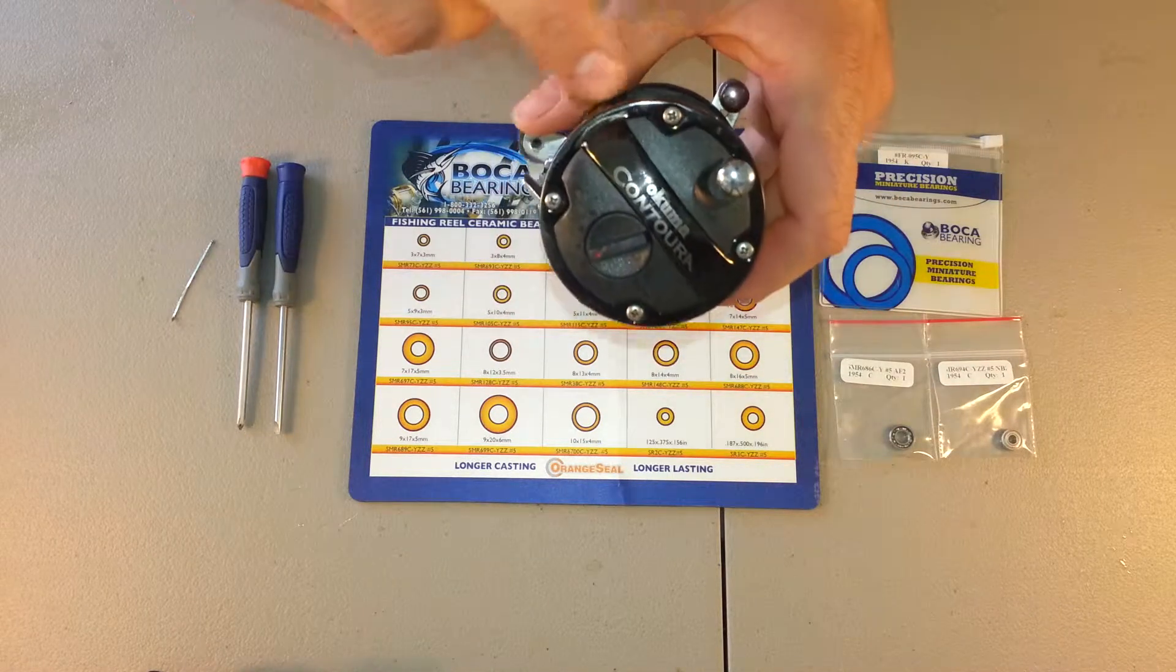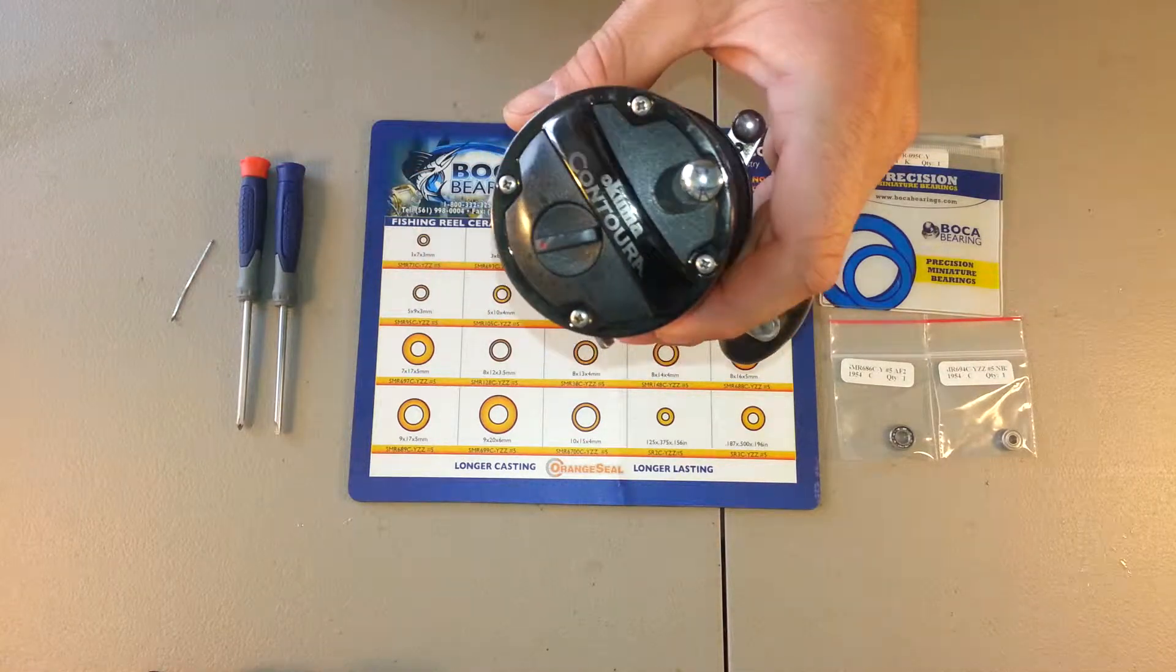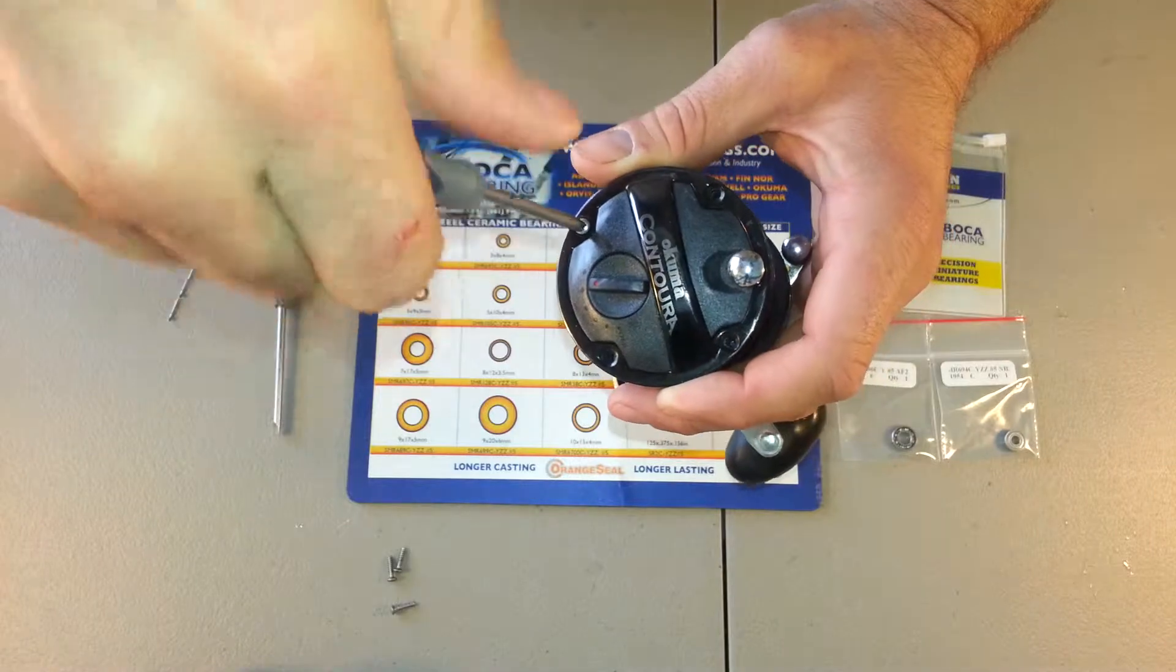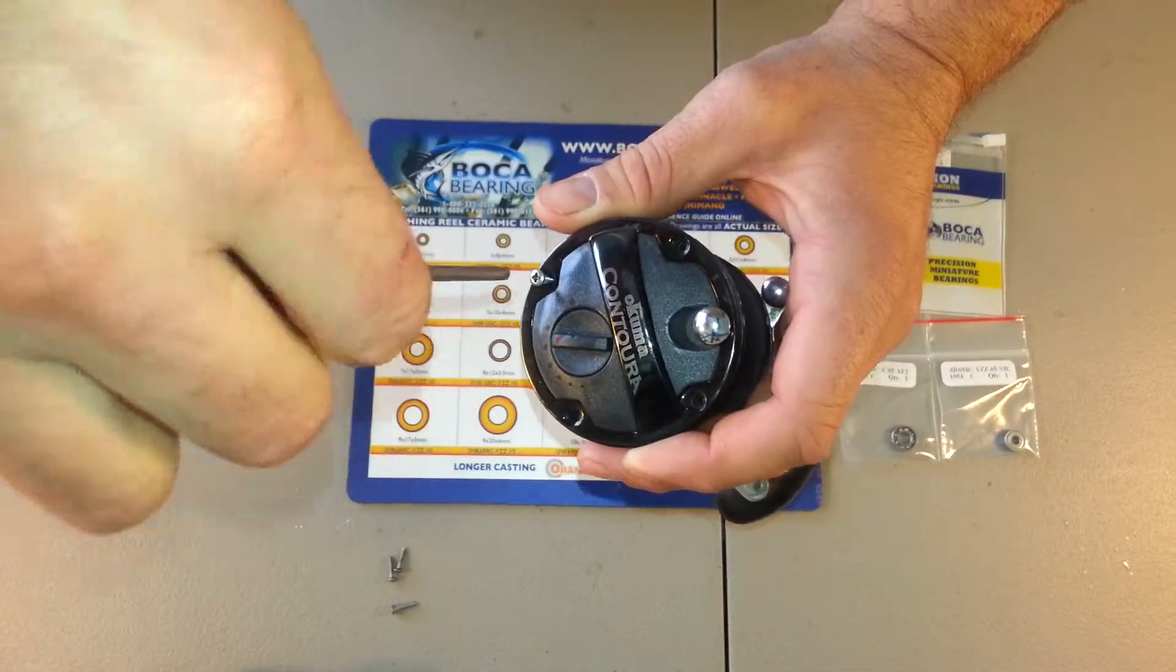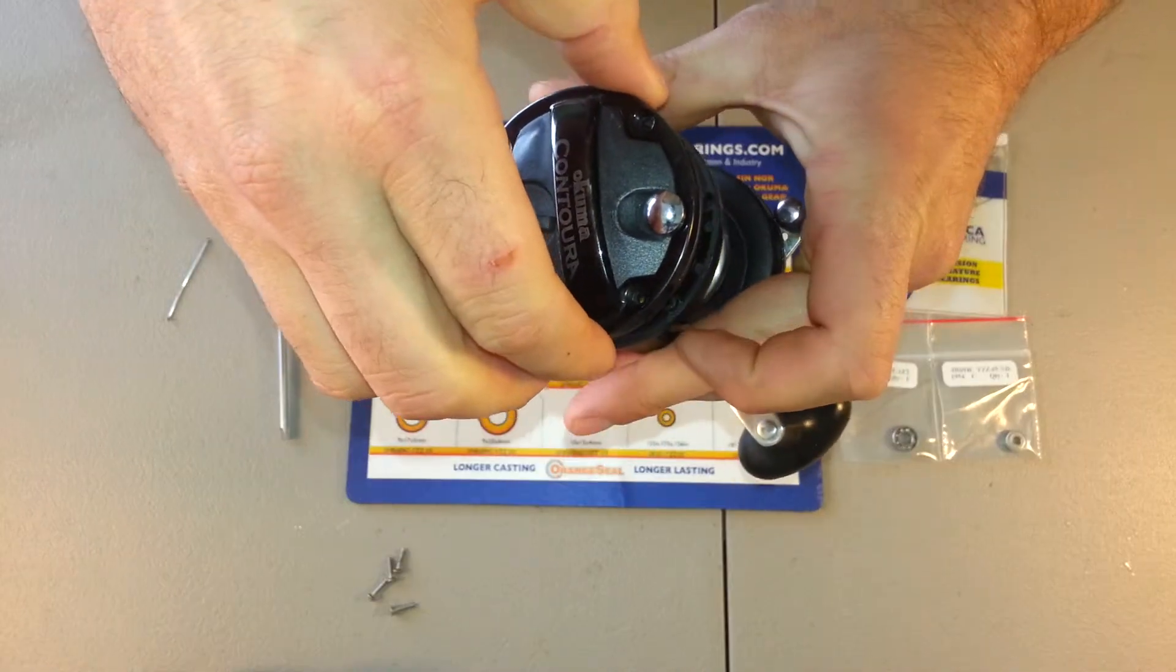First up, we've got to remove the four Phillips screws off the side plate. I've removed all the screws, now I'll pull the side plate off.